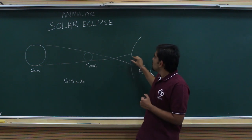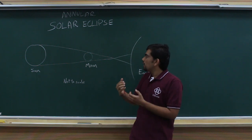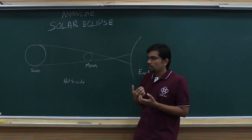This results in different kinds of eclipses which we can see from the Earth.